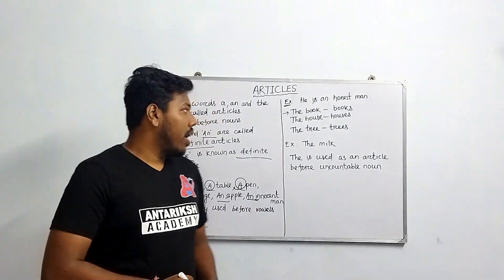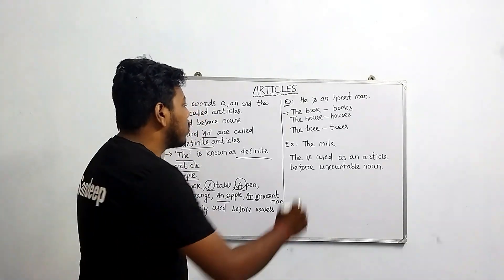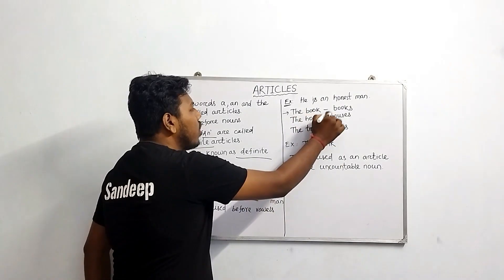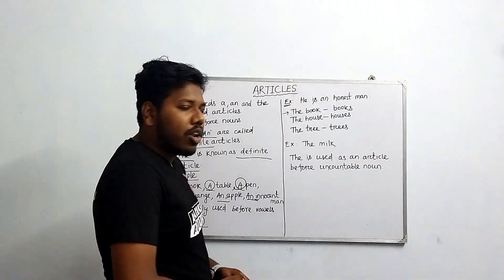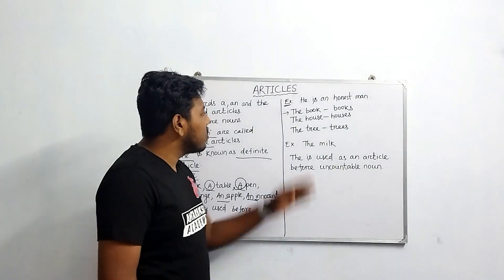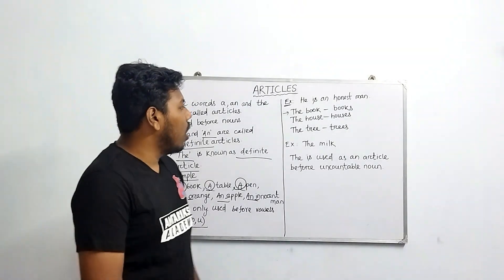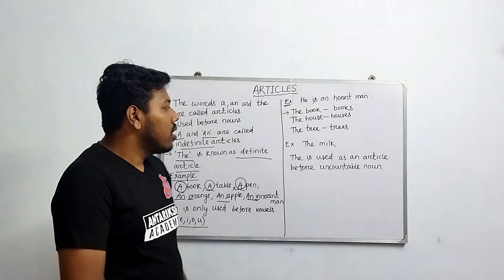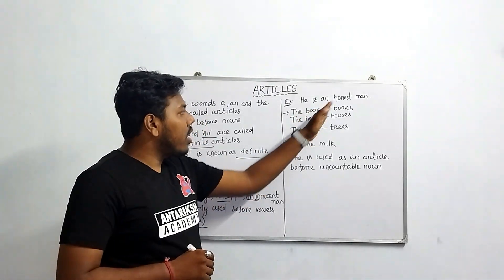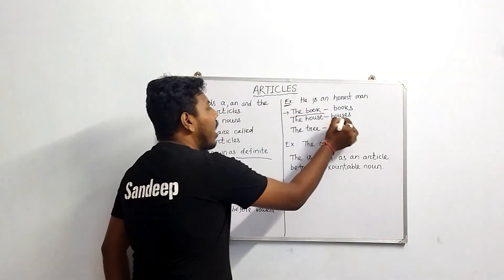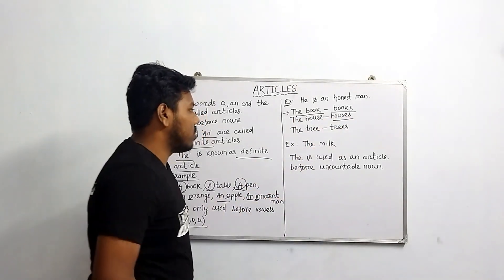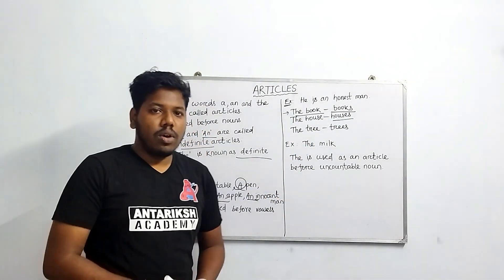The next article is 'the'. See the examples: the book and the books, the house and the houses, the tree and the trees. 'The' is the definite article and we use it in both singular and plural forms.